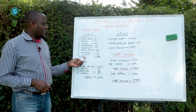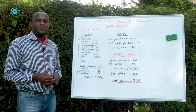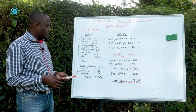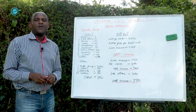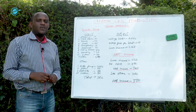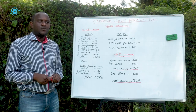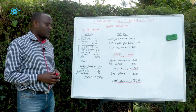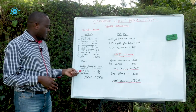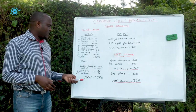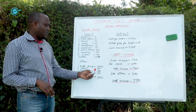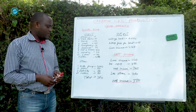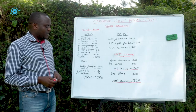Here we are assuming you are doing rain-fed farming. But if you have a water source and are doing irrigation using that water source, you will need a water pump at $200, pipes at $50, electricity at $60, and labor at $50 — giving an additional expense of $360.